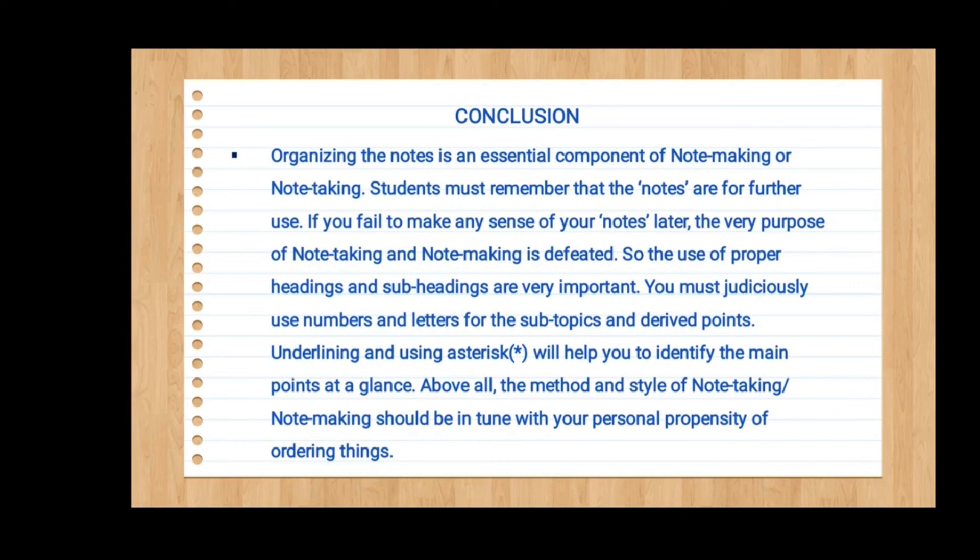You must judiciously use numbers and letters for subtopics and rare topics. Underlining and using asterisks help you identify the main points at a glance. The method and style of note-making and note-taking should be in tune with your personal property of ordering things. Both skills are very important, but what we get in the paper — in question number 2B — is our note-making skill.